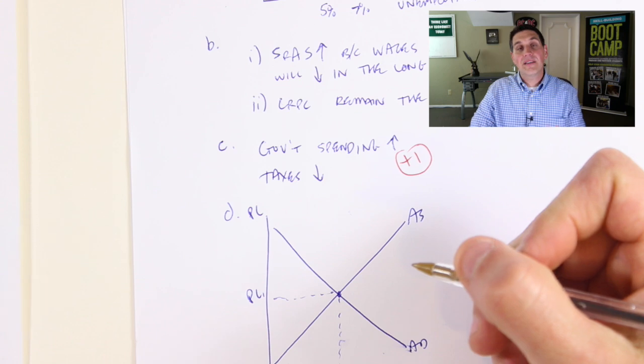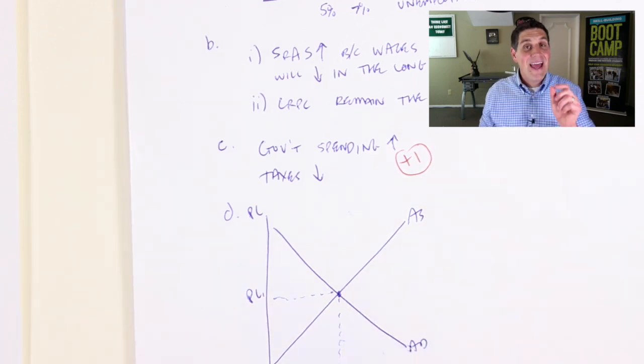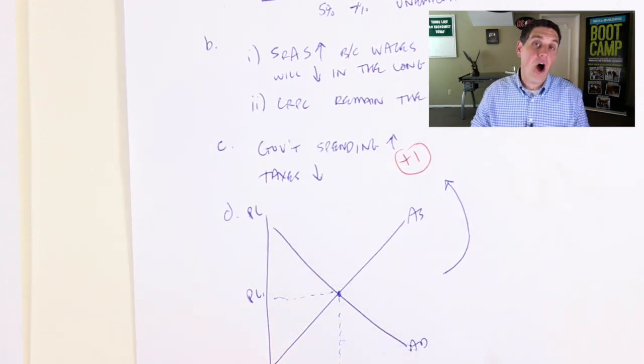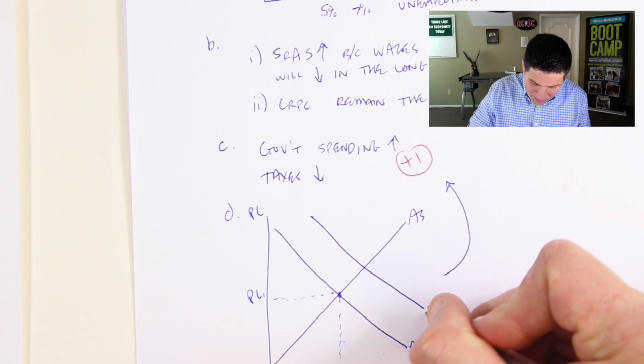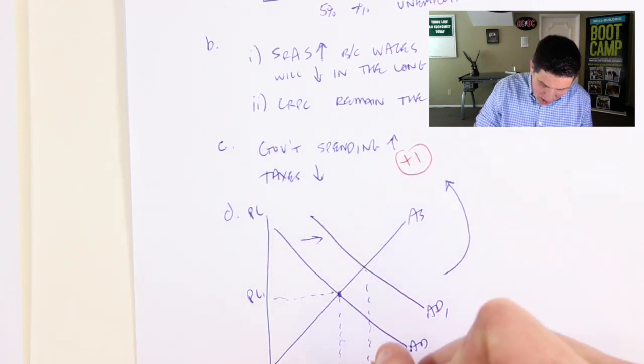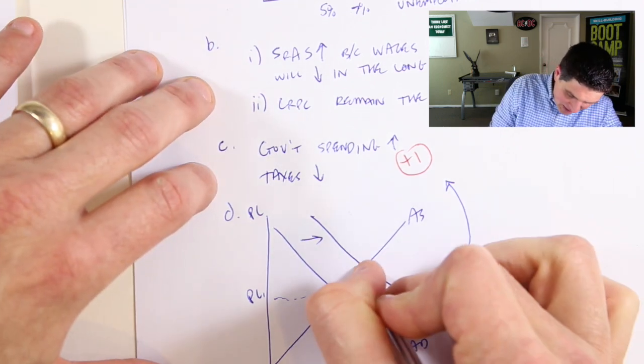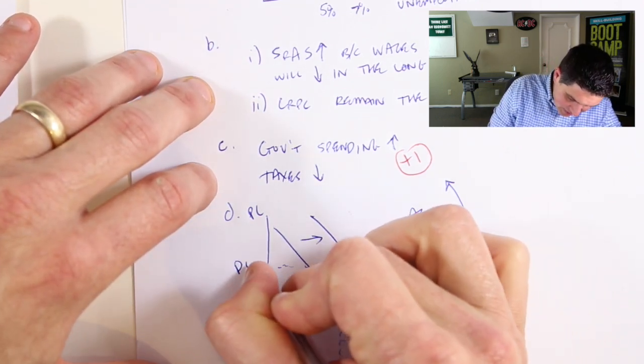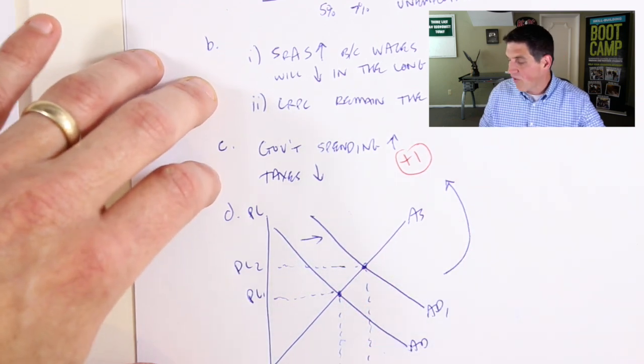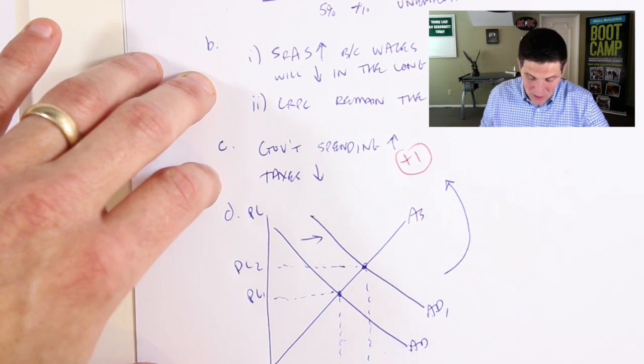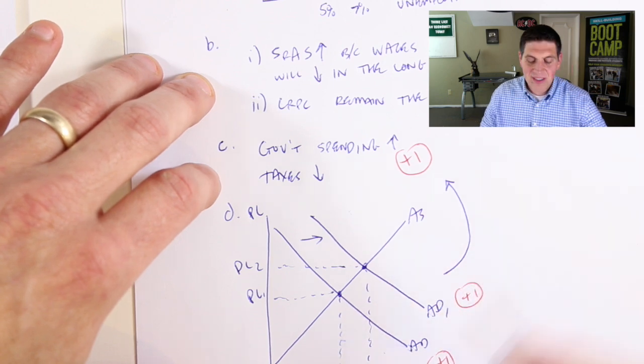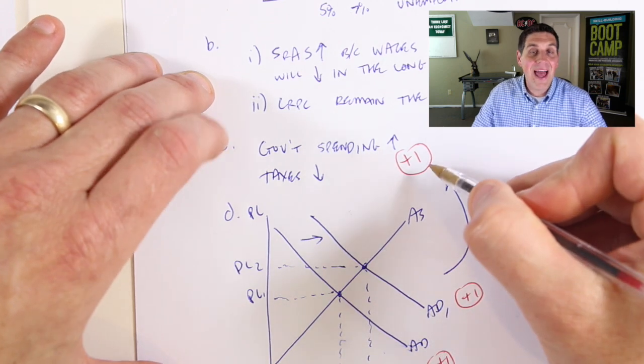Now, the question didn't say, where is the economy or how do you draw aggregate demand and supply? It asks you, how do you show what you did in C on that graph? So you have to draw a shift in aggregate demand to the right with an arrow. And say, now we're over here, this is Y2 and price level 2, price level 2 is there. So we went from here to here. That's a correct graph. That's what we're looking for. And it turns out that's worth two points. One point for drawing just the graph at equilibrium and another point for showing the same shift that you said in C.